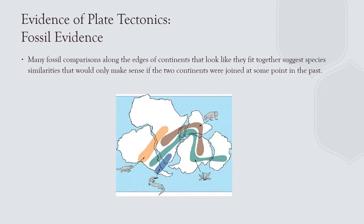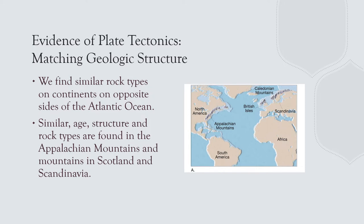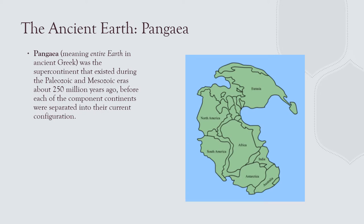Fossil evidence also points to similar origins along continental boundaries. Ancient climate also points to the fact that these continents were once together. Ancient land masses further support continental drift — you can see the Appalachian Mountains move up North America, through Britain, and then through northern Scandinavia. When you pile all the evidence up — and this is before the Glomar Challenger, though now satellites can measure spreading — you come up with continental drift. Here's a picture of Pangaea 250 million years ago, the last time the Earth had one landmass.